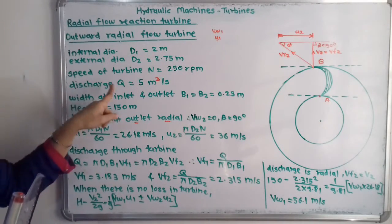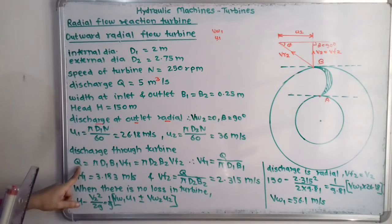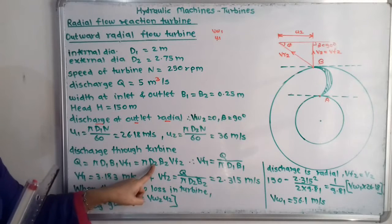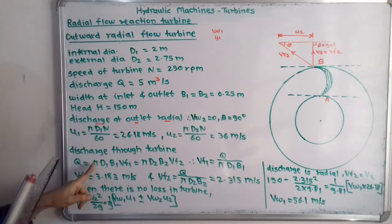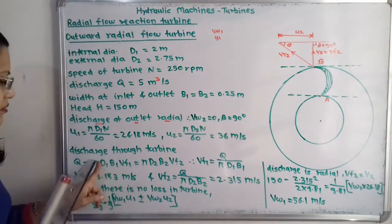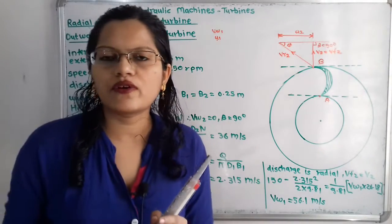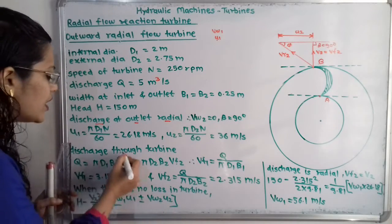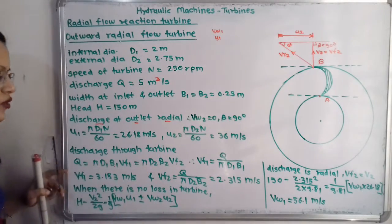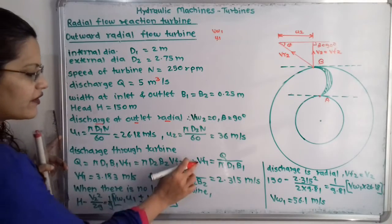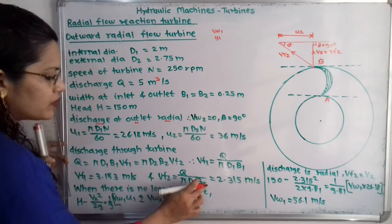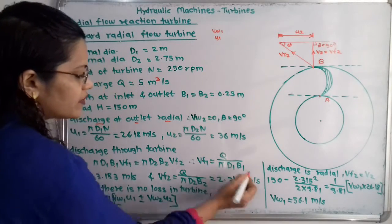For discharge through the turbine, Q = pi × D1 × B1 × Vf1 = pi × D2 × B2 × Vf2, since discharge remains the same. With Q known, D1 known, and B1 = B2 = 0.25 meter, we can solve for the flow velocities. We get Vf1 = 3.183 meters per second, and Vf2 = 2.315 meters per second.